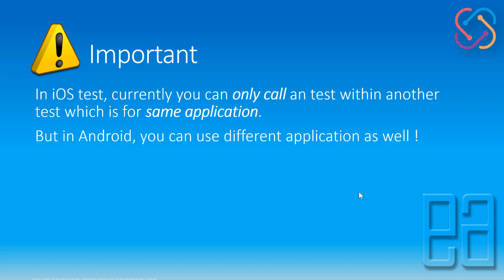The most important thing to note is that in iOS tests, you can only call a test within another test which is for the same application type. You cannot call a different application within another test, because it doesn't make sense to run an application of a different type within your current application. This is still possible in Android by calling a different bundle, but as of now be informed that you can only run a test of the same application within another application using this option.